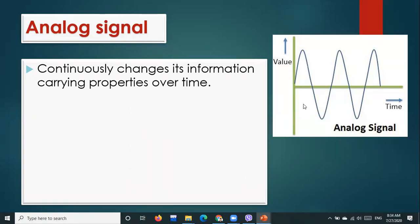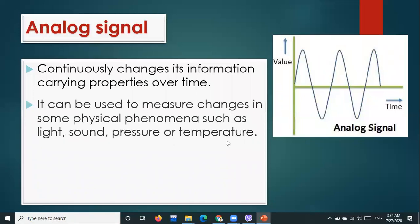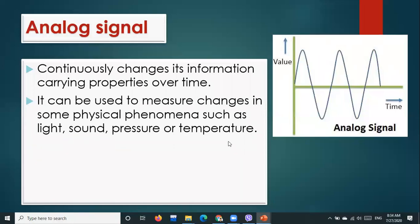Analog signal continuously changes its information-carrying properties over time. It can be used to measure changes in physical phenomena such as light, sound, pressure, and temperature. A good example is a volume control device — as volume goes up, sound continuously increases.